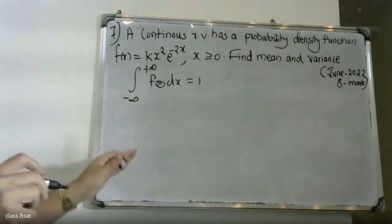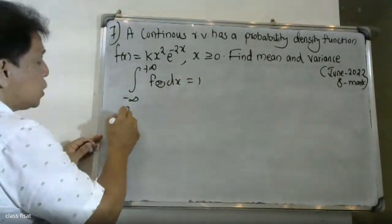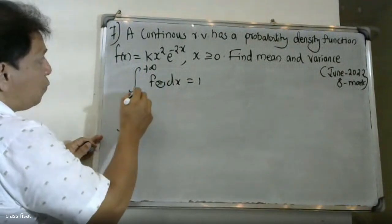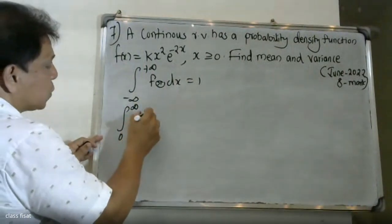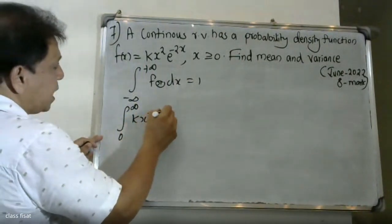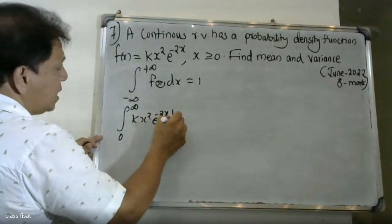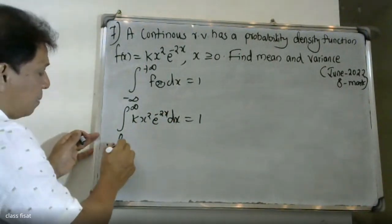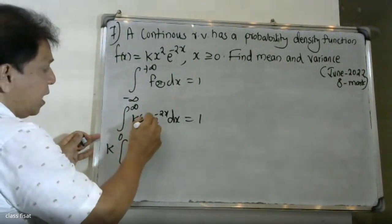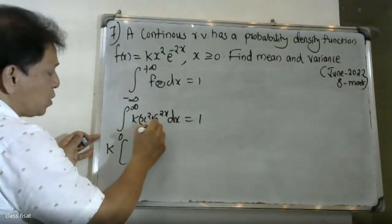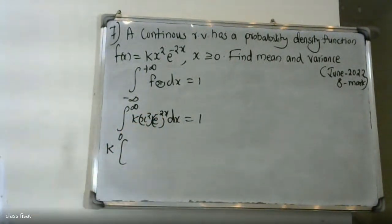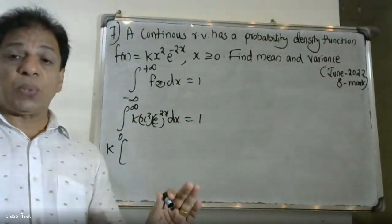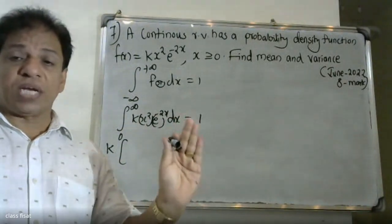Here the integral from 0 to infinity of f(x), which is k x squared e raised to minus 2x, dx is equal to 1. We apply integration by parts, with x squared as the first function and e raised to minus 2x as the second function.